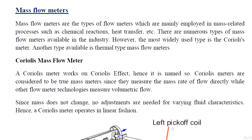Coriolis meters are considered to be true mass meters since they measure the mass rate of flow directly, while other flow meter technologies measure volumetric flow. Since mass does not change, no adjustments are needed for varying fluid characteristics. Hence, the Coriolis meter operates in a linear fashion.